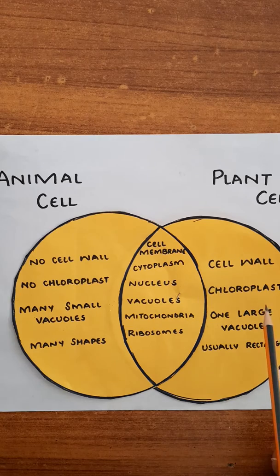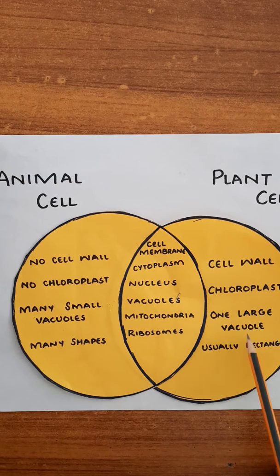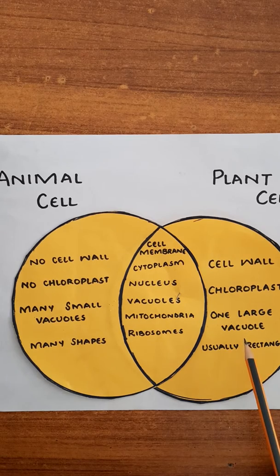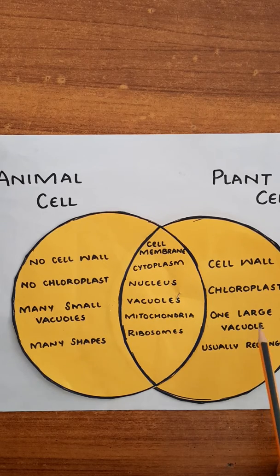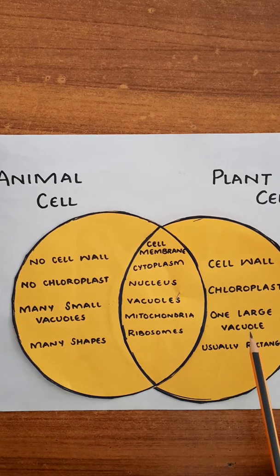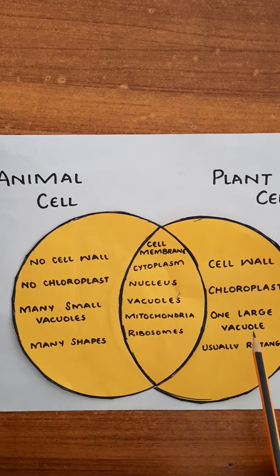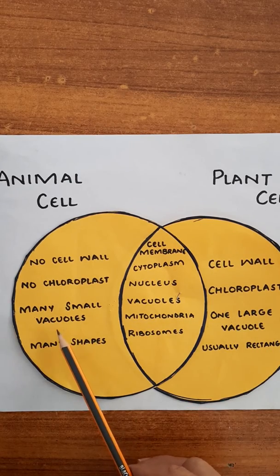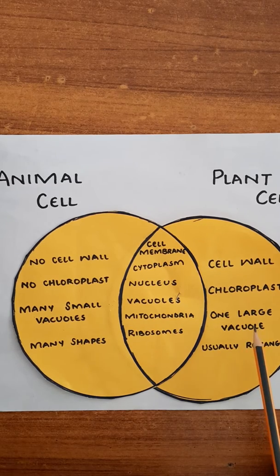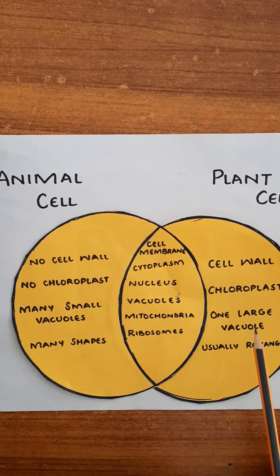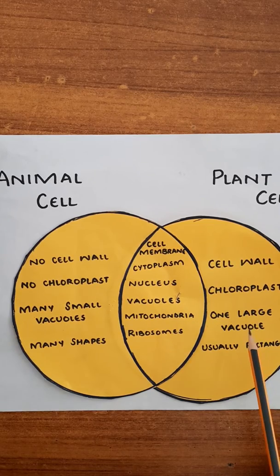Another difference is the presence of a large vacuole. As I mentioned, a vacuole is a large sac-like structure in which food and water are stored. Plants have one large vacuole while animals have many small vacuoles, because plants can make their own food and need to store it in a permanent location.